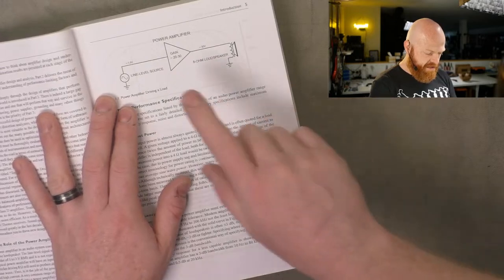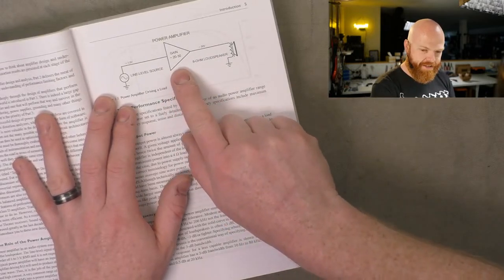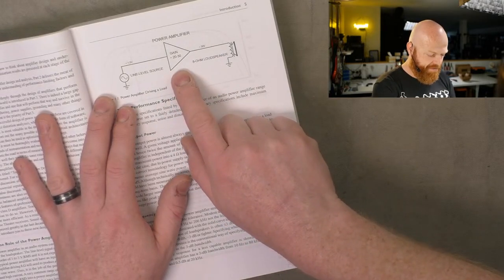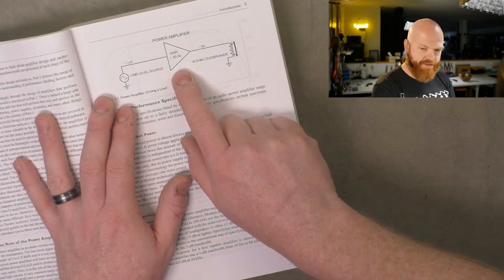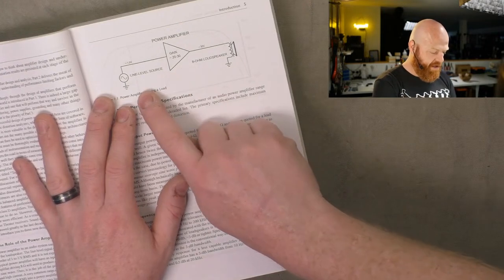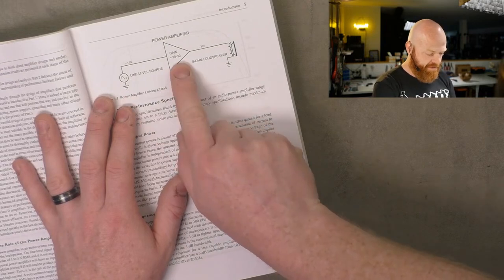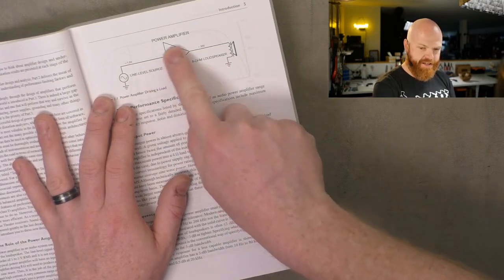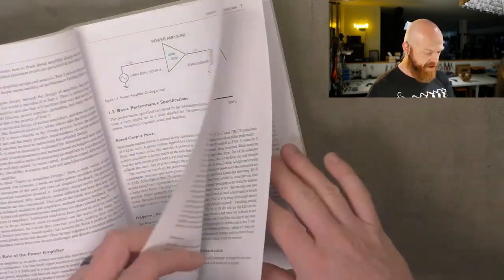He starts off, you know, he's got the Mr. Men dude, Mr. Fast or something, triangle one with legs. Line level source gain, 20 or 30, 8 ohm loudspeaker. Essentially that's the building block of the whole system.